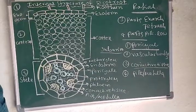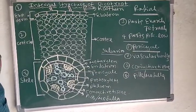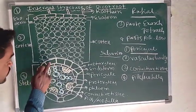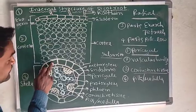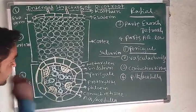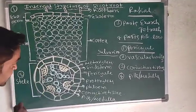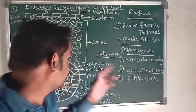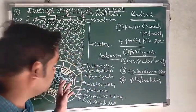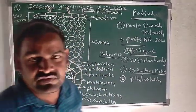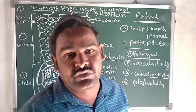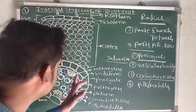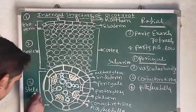Some cells in the endoderm are without suberin material and without intercellular spaces — these are called passage cells. Passage cells mainly allow water and minerals to pass from the cortex to the stele because they lack suberin material.